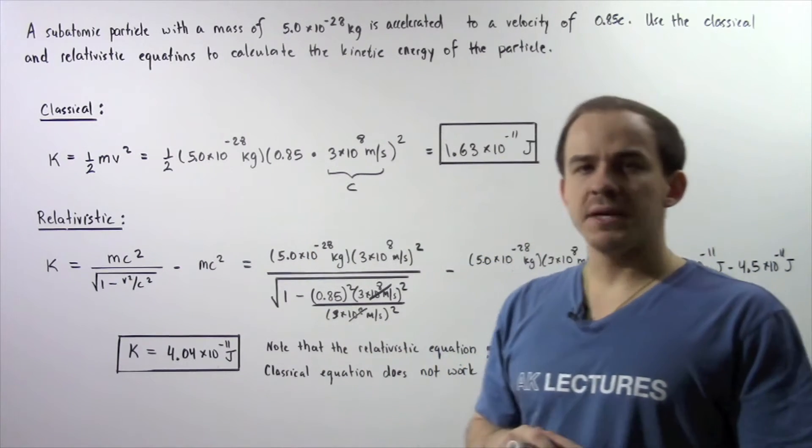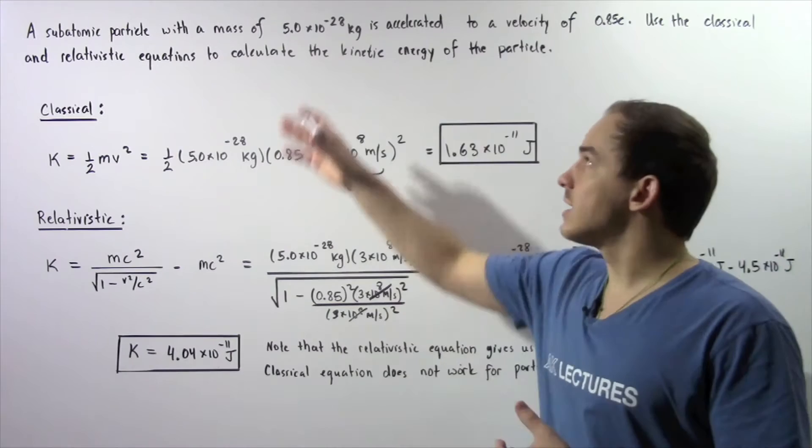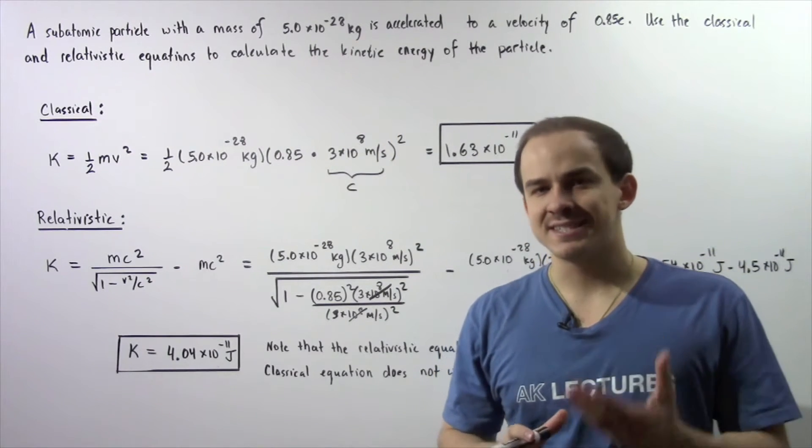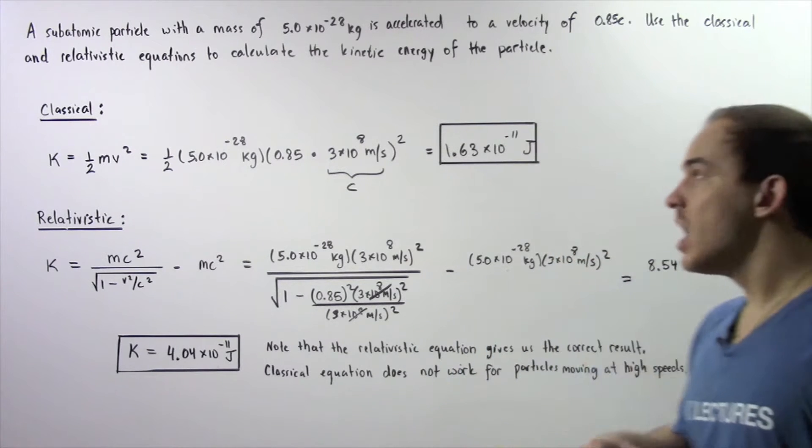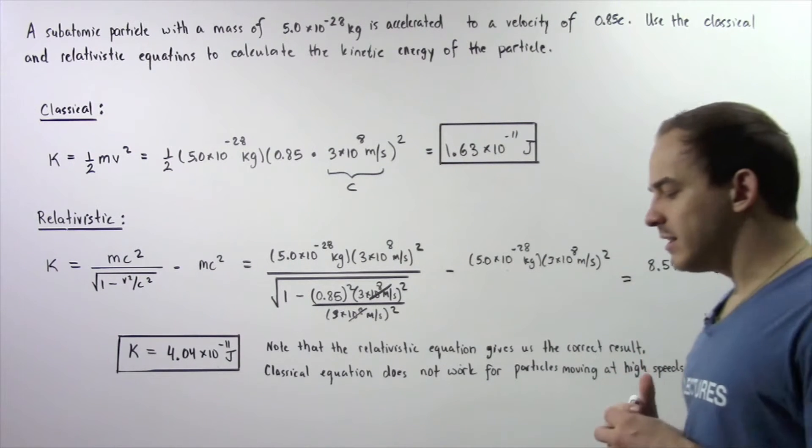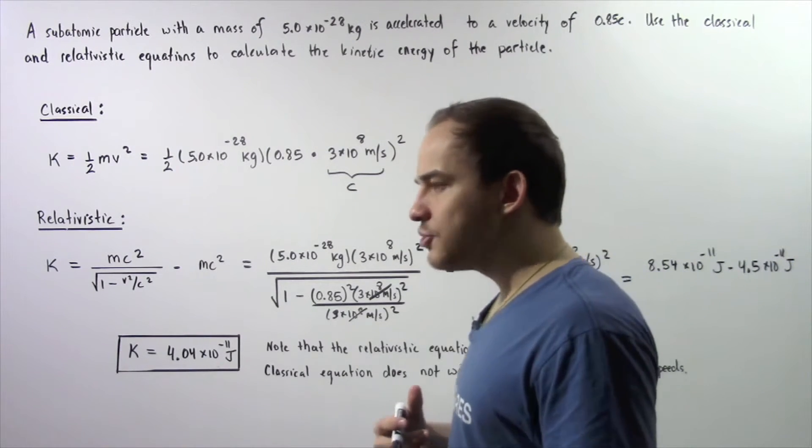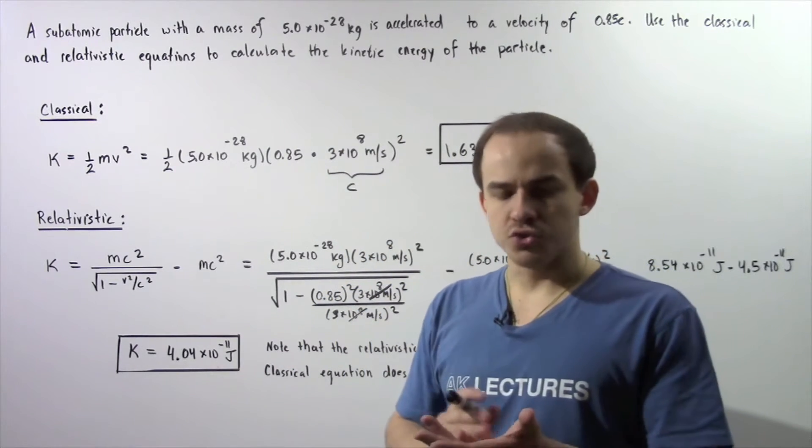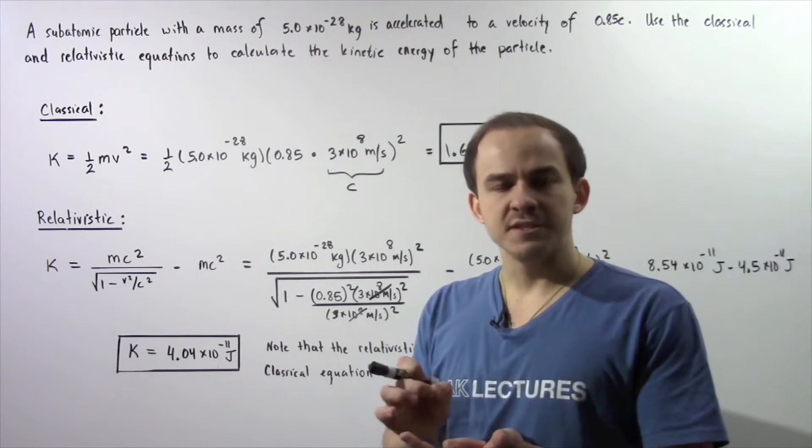A subatomic particle with a mass of 5 times 10 to the negative 28 kilograms is accelerated to a velocity of 0.85c, where c is the speed of light in a vacuum. We want to calculate the kinetic energy of this particle by using the classical approach and the relativistic approach.